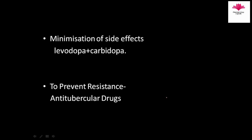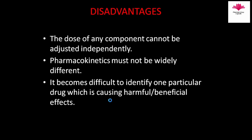Fixed dose combinations also minimize side effects. As seen in the levodopa example, the dose is reduced by nearly 75 percent, and its side effects like vomiting and tachycardia are also reduced. The combination is sometimes given to prevent resistance, as in anti-tubercular drugs. Now let's look at the disadvantages of fixed dose combinations.